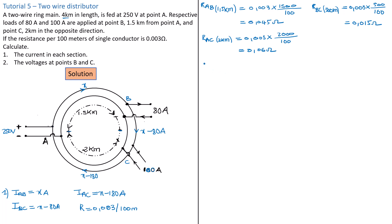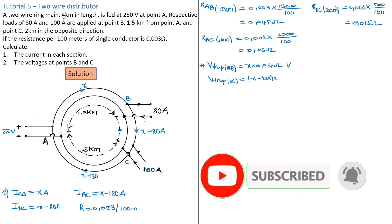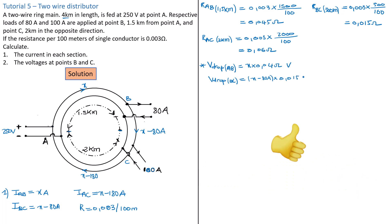From here we can get our voltage drop on each section. The voltage drop on section AB will be the current x times the resistance 0.045. The voltage drop on section BC is going to be x minus 80 amps times the resistance on section BC, which is 0.015.